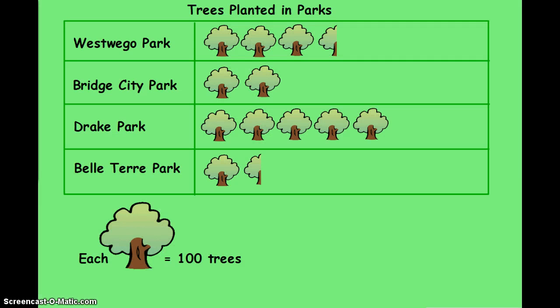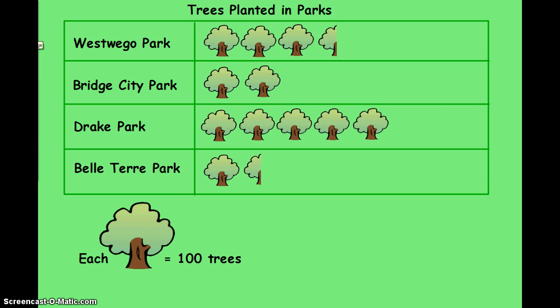Here's another one that shows the amount of trees that are planted in parks. Each tree stands for 100. Here I have some halves, so half of 100 is 50. Here's another example of a pictograph.